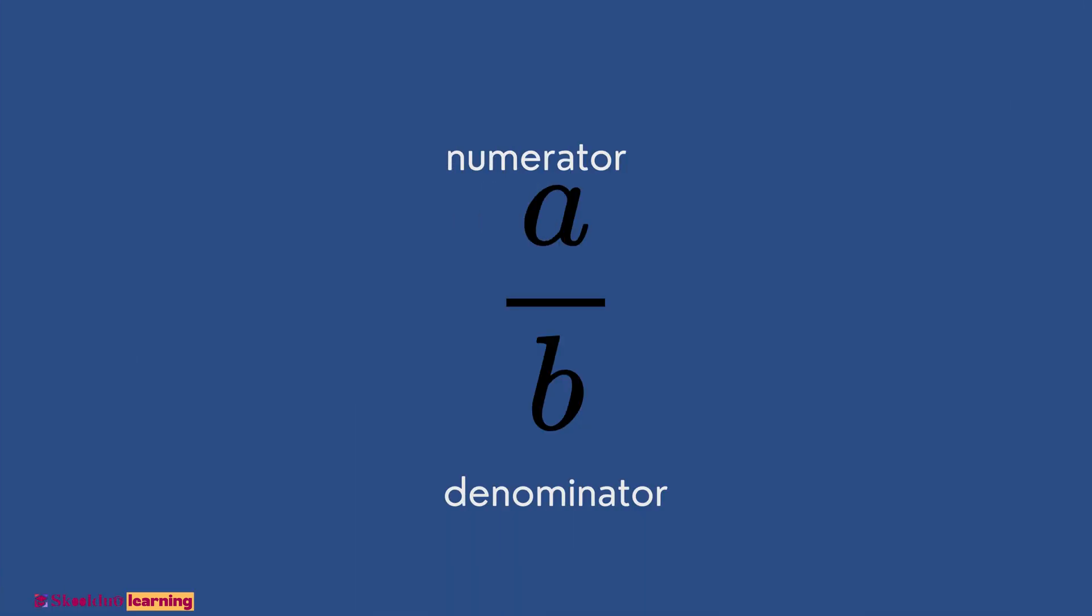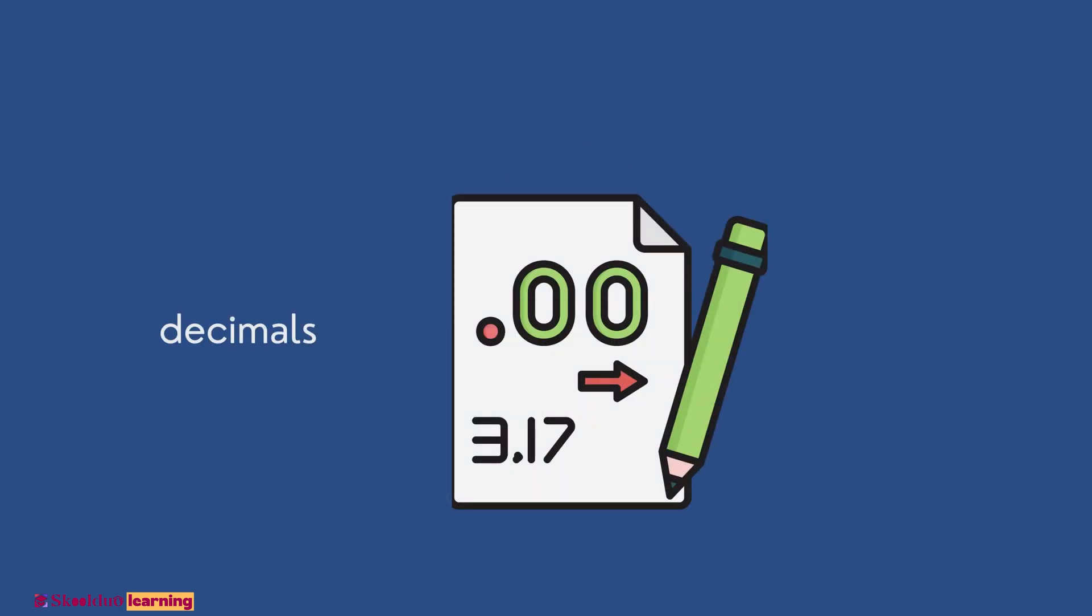Fractions are quantities represented in the form of A over B, where A is the numerator and B is the denominator. Values between two whole numbers or integer can be represented in the form of decimals.